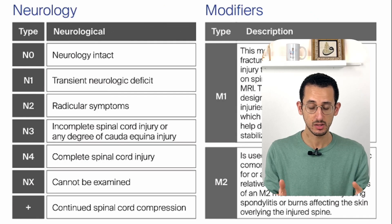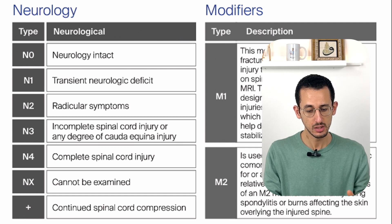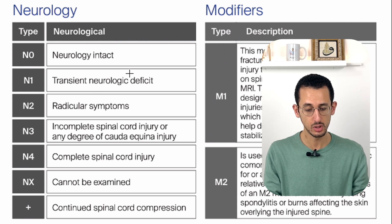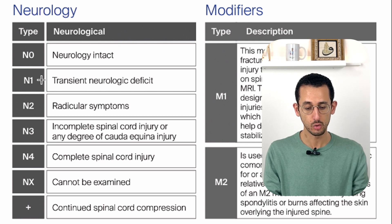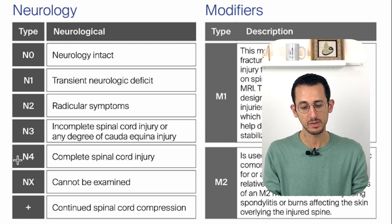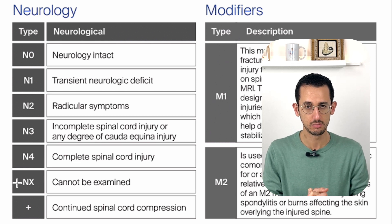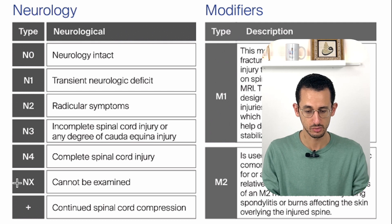After describing the morphology, you add the neurology and the modifiers. The neurology is similar to the TLICS score: N0 is neurologically intact, N1 is transient symptoms, N2 is radicular symptoms similar to nerve root symptoms in TLICS, N3 is incomplete injury, N4 is complete injury, and NX is used when the patient cannot be examined — such as if the patient is unconscious or has a traumatic brain injury.